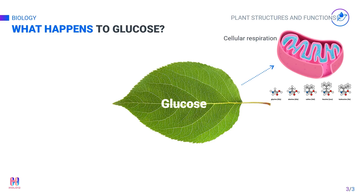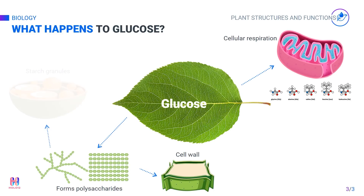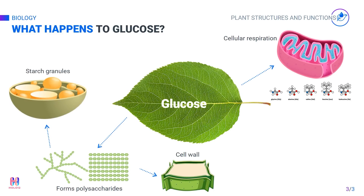Glucose monomers can also be joined together to form the polysaccharides starch and cellulose. Starch is an insoluble molecule that is used as an energy source. Cellulose is an important component of the plant cell wall. Glucose can also be converted into fats and oils to store energy in seeds.